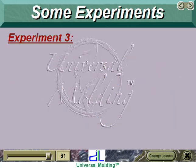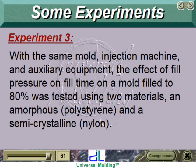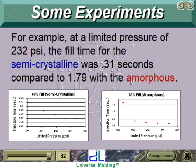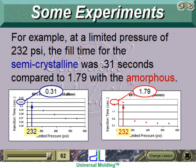Experiment 3: With the same mold, injection machine, and auxiliary equipment, the effect of fill pressure on fill time on a mold filled to 80% was tested using two materials — an amorphous (polystyrene) and a semicrystalline (nylon). Semicrystalline material, being more liquid, required less pressure. For example, at a limited pressure of 232 psi, the fill time for the semicrystalline was 0.31 seconds compared to 1.79 seconds with the amorphous.